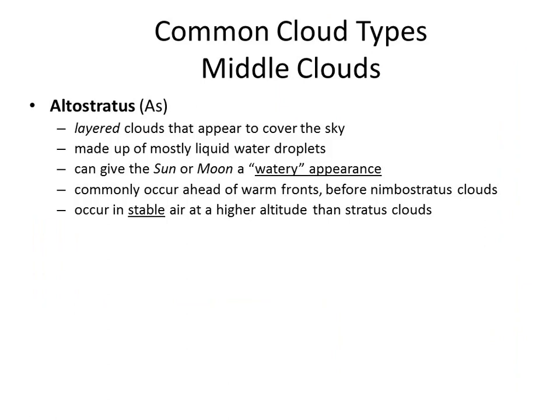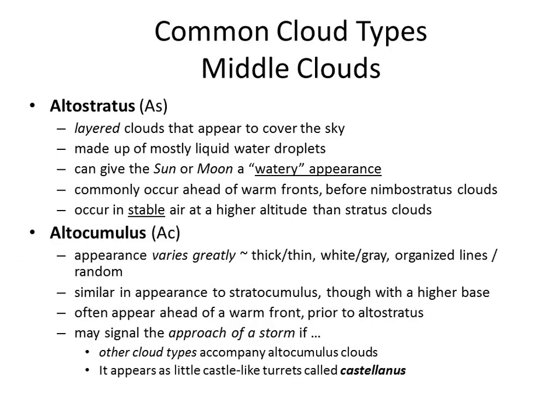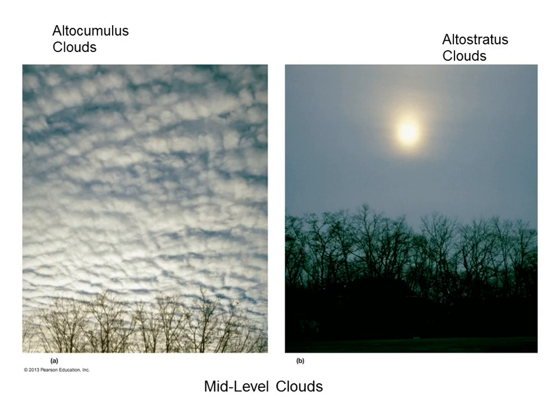The middle-level clouds need to have the word alto in them. In Chapter 16 we're going to talk about rainbows, and one thing I'll hold you accountable to know is the idea of a corona and a halo. A halo is basically a circle around the sun or the moon, and it's caused by these thin clouds. So altostratus, altocumulus — those are your middle-level clouds.